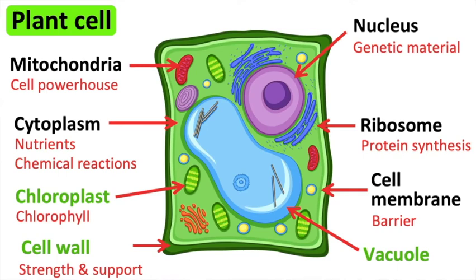The cell walls are made from cellulose fibres. The cell wall surrounds the cell membrane. It strengthens the cell and provides support for the plant.